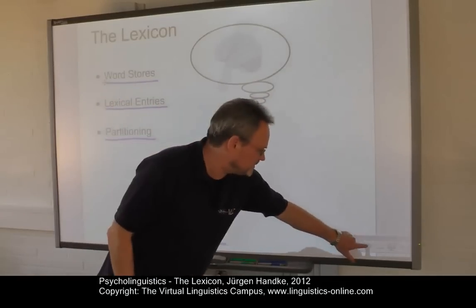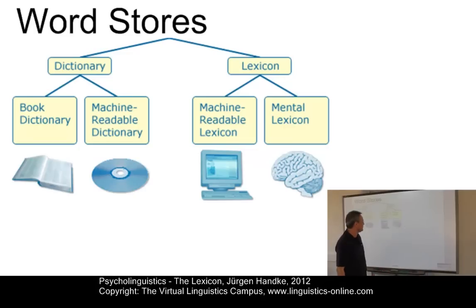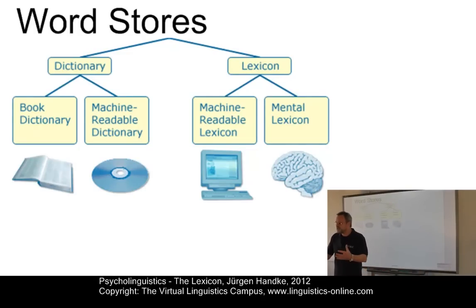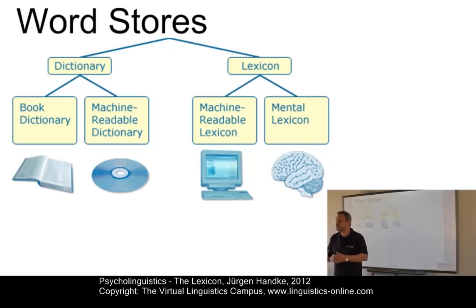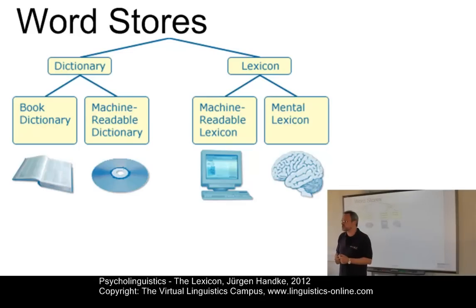So let's start with the general taxonomy of word stores. Language is a communication system employing arbitrary symbols. These symbols, which are normally words, have to be stored somewhere. And the following different types of word stores exist.